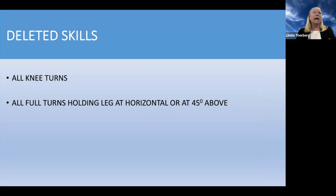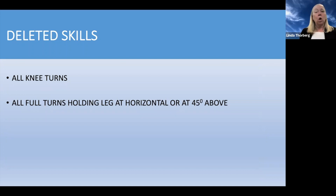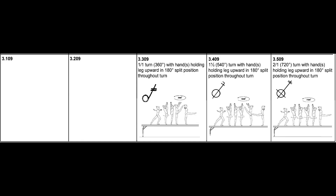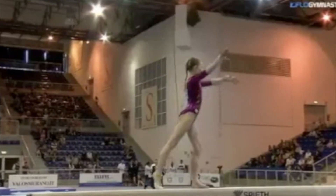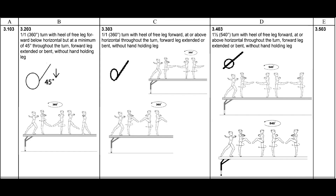We did remove a couple of skills from the code: all knee turns on beam — I don't think I've seen one for years and years — and all full turns holding their leg at horizontal or 45 degrees above. They can still do a turn holding their leg at vertical, which is fine, or not hold their leg.